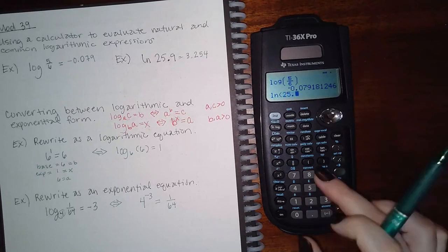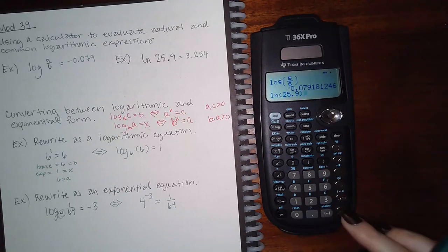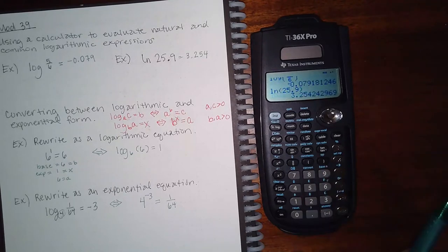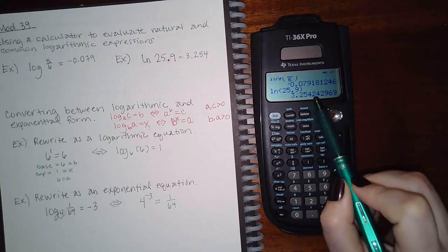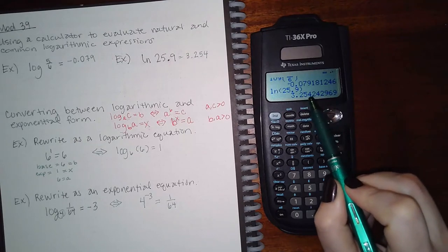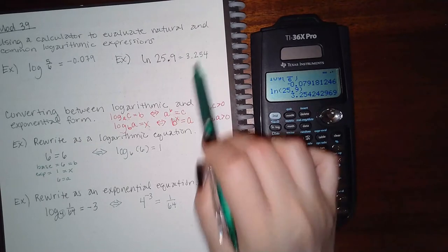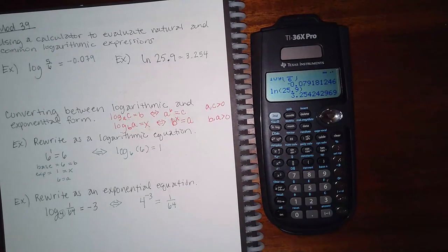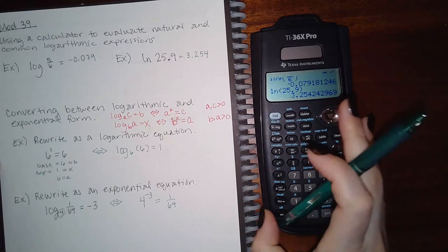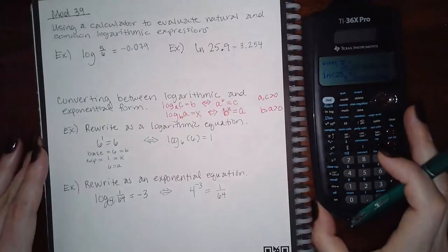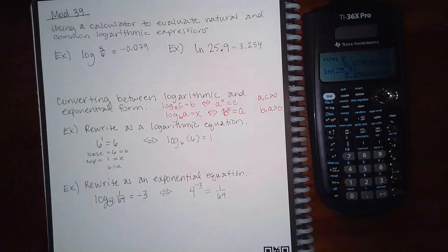For this problem, click the button only one time to keep it as ln, then type 25.9, close the parentheses, and hit Enter. Tenths, hundredths, thousandths — the two is not going to affect the four, so the answer is 3.254.